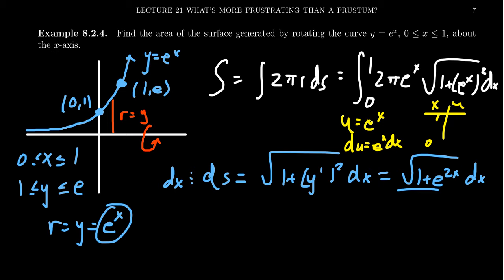When x is 0, u would equal 1. When x is 1, u is equal to e. You get the following integral: 1 to e, 2π, and the e to the x dx would come together just to be a du. You're going to get the square root of 1 plus u squared du.